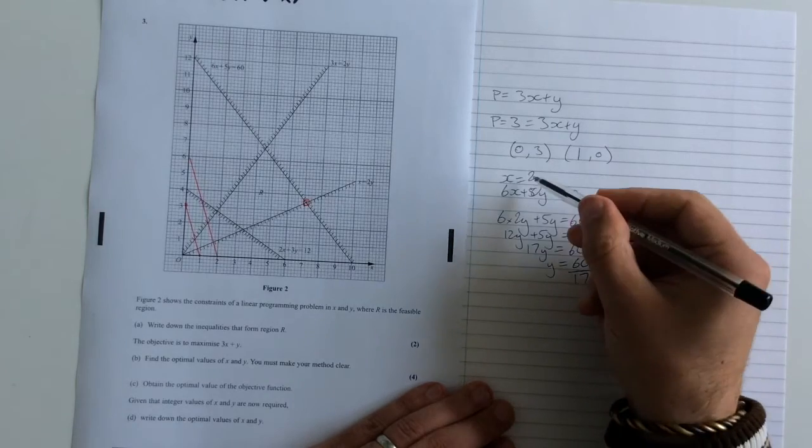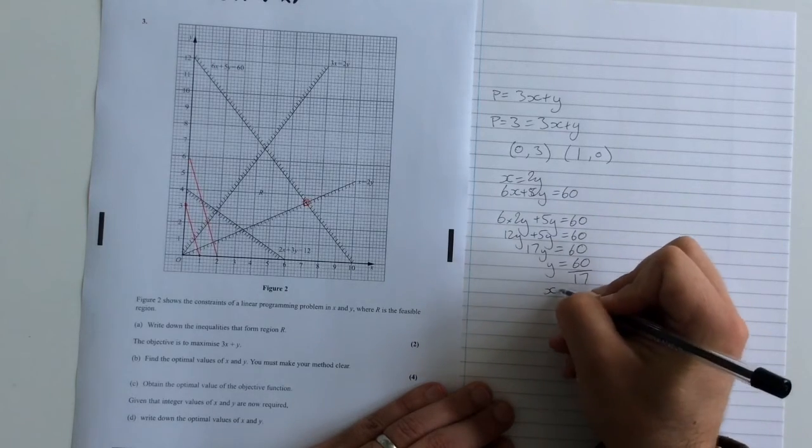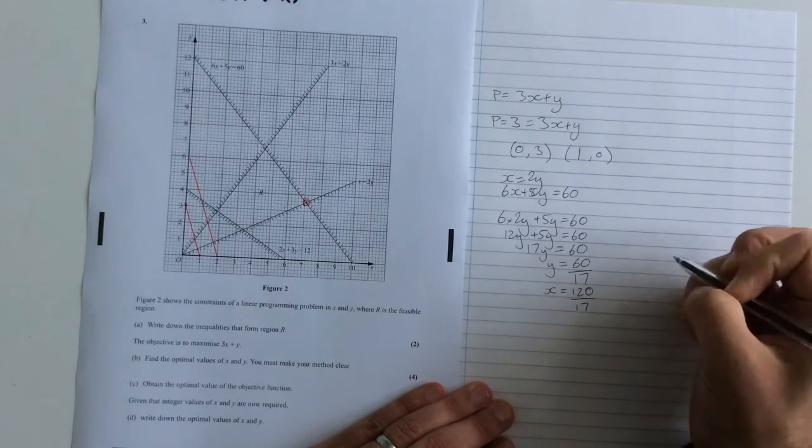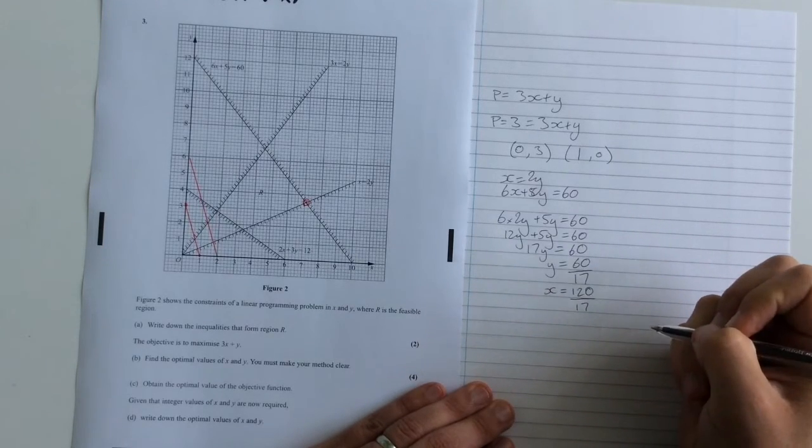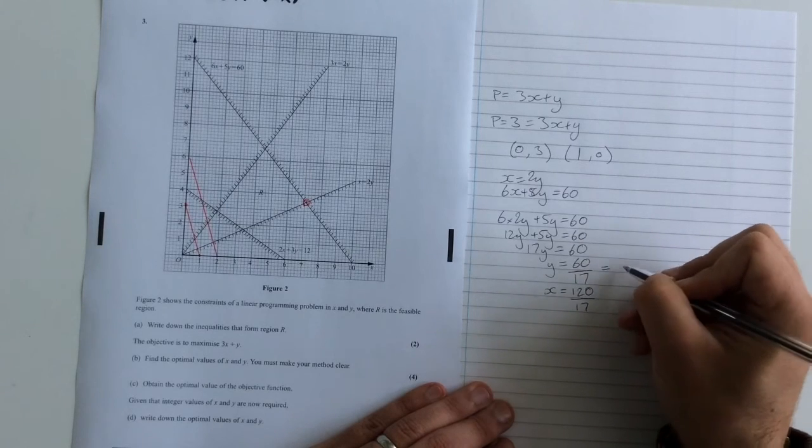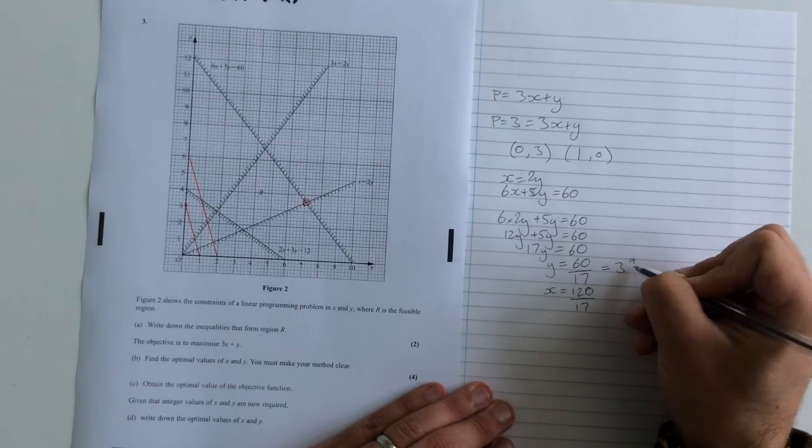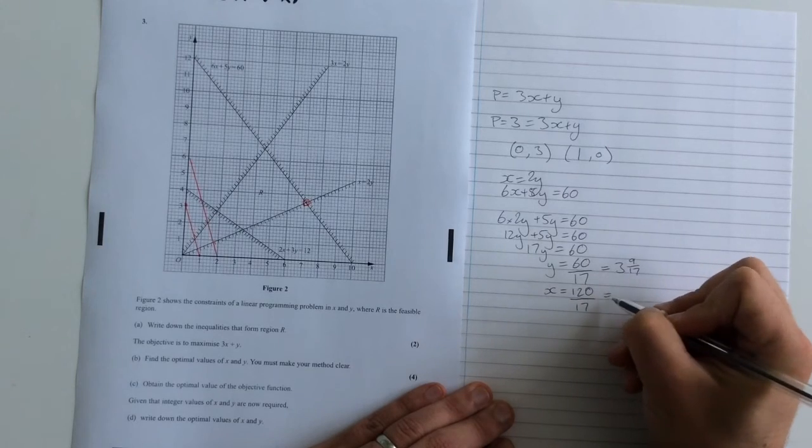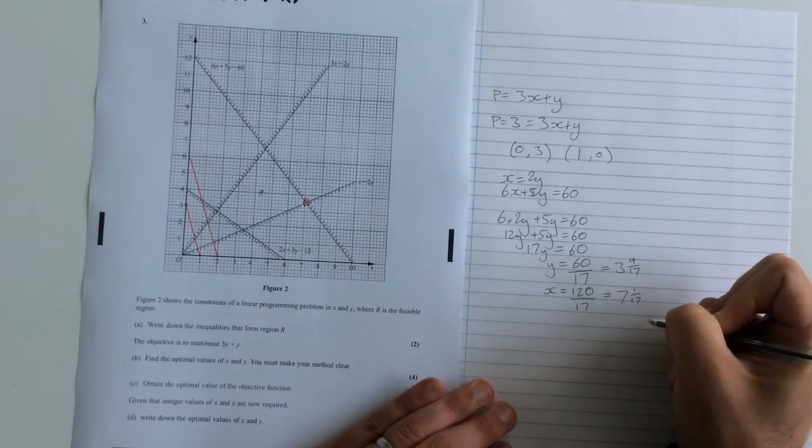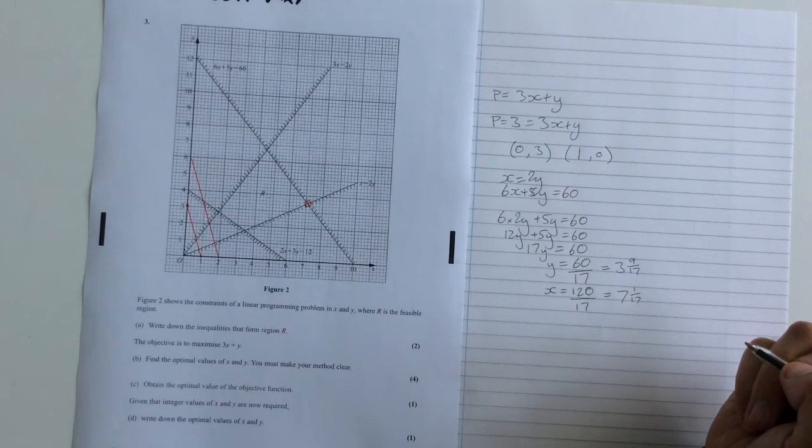Taking that, we know that x is 2y, so x must, of course, be 120 over 17. We could simplify these if we wanted to, and that gives us y is 3 and 9 seventeenths. And this would give us 7 and 1 seventeenths. And, of course, you can use a calculator to work those out if you want to.